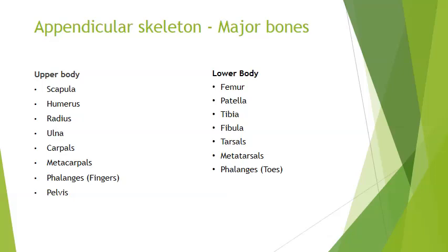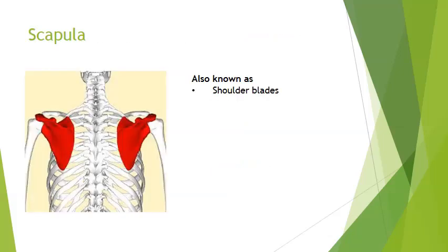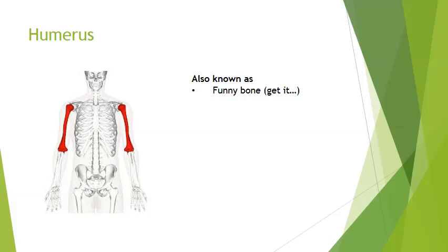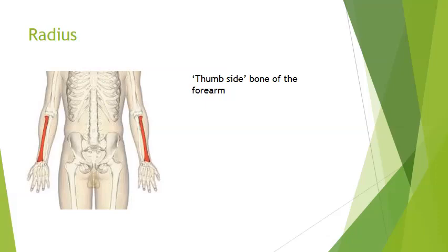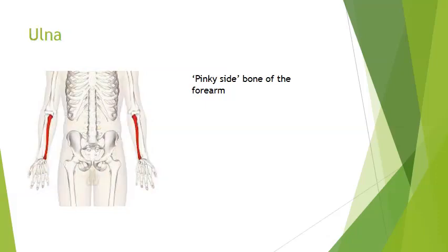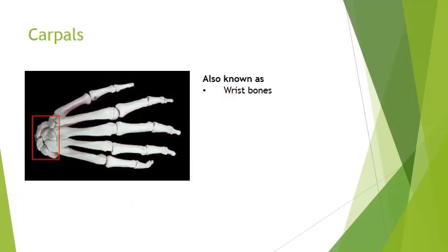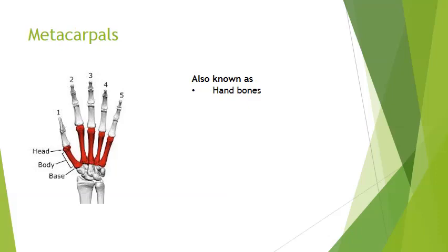Again, take a moment here to start creating your flashcards for each one of these bones. Scapula. Humerus. Radius. Ulna. Carpals. Metacarpals. Phalanges.